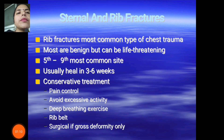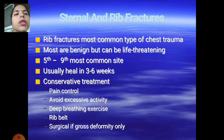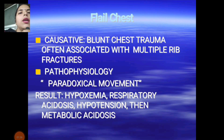Sternal and rib fractures — rib fractures are the most common type in chest trauma. They can be life-threatening; the fifth through ninth ribs are the most common sites. Healing typically takes three to six weeks. Conservative treatment includes pain control, avoiding strenuous activity, deep breathing exercises, and surgical intervention only if there is gross deformity.